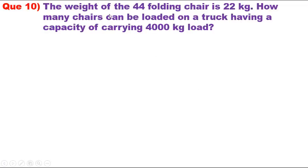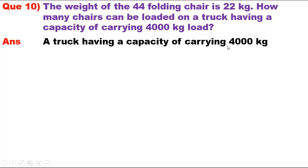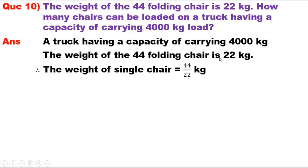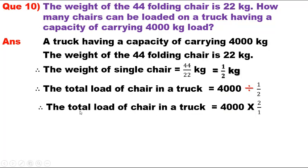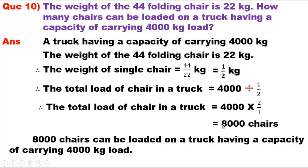Question 10. The weight of 44 folding chairs is 22 kg. How many chairs can be loaded on a truck having a capacity of carrying 4000 kg of load? Answer. The weight of 44 folding chairs is 22 kg. Therefore, the weight of 1 chair = 22 / 44 = 0.5 kg. Total chairs that can be loaded = 4000 / 0.5 = 4000 x 2 = 8000 chairs. Therefore, 8000 chairs can be loaded on a truck having a capacity of carrying 4000 kg.